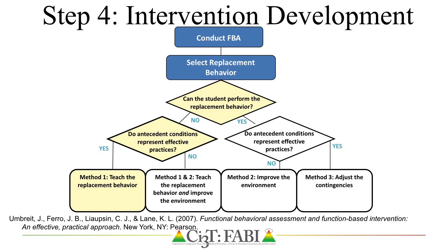Based on answers to these questions, teams are guided to one of the following methods. Method 1, Teach the Replacement Behavior, which is for students with acquisition deficits, meaning they are unable to perform their replacement behavior under any given condition. Method 2, Improve the Environment. Method 3, Adjust the Contingency. These methods are typically selected for students with performance deficits, meaning they are able to perform their replacement behavior, but aspects of their environment or the contingencies need to be adjusted to support the student in performing their replacement behavior.